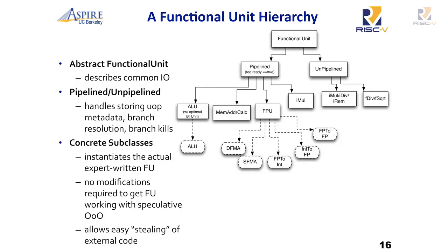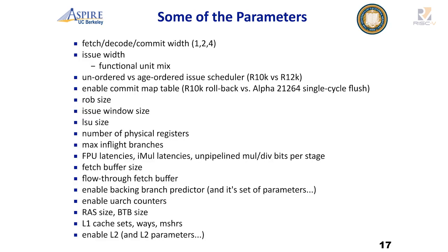We describe functions as a hierarchy, which lets me reuse other people's code, wrapped in pipeline objects that handle all the branch speculation and branch kills. There are a couple of parameters you can choose in BOOM: some like ROB size are a simple parameter, while others like fetch, decode, and commit widths change a lot of code. Describing the issue width invokes a whole generator framework. You can also play around with the issue scheduler or how rollback works on exceptions.